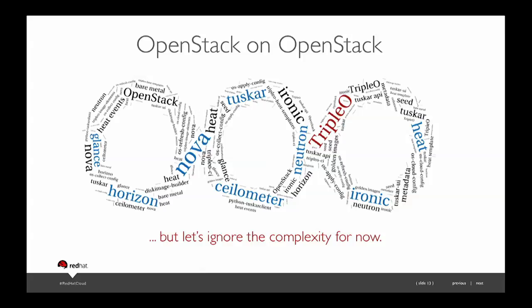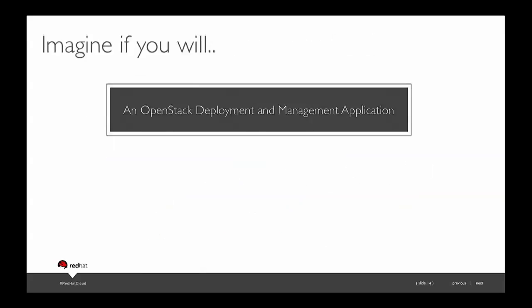Triple O is OpenStack on OpenStack. For those who understand Triple O, you can appreciate a word cloud describing a cloud that deploys a cloud. But basically, just think of it as a simple deployment and management application — an application that deploys OpenStack.